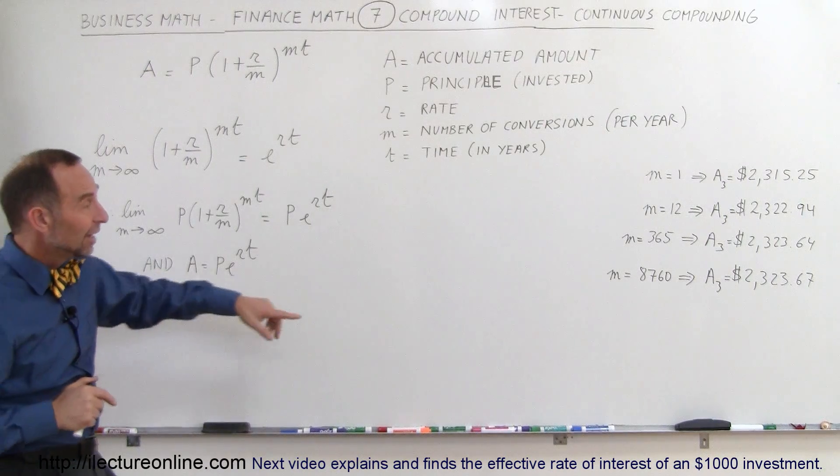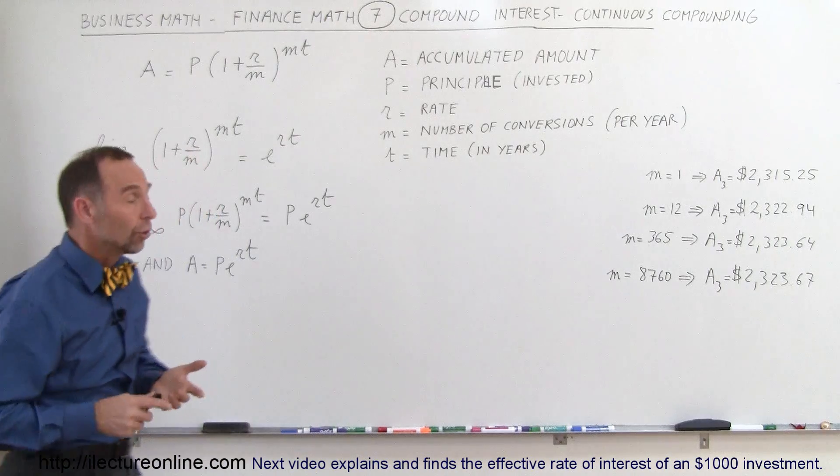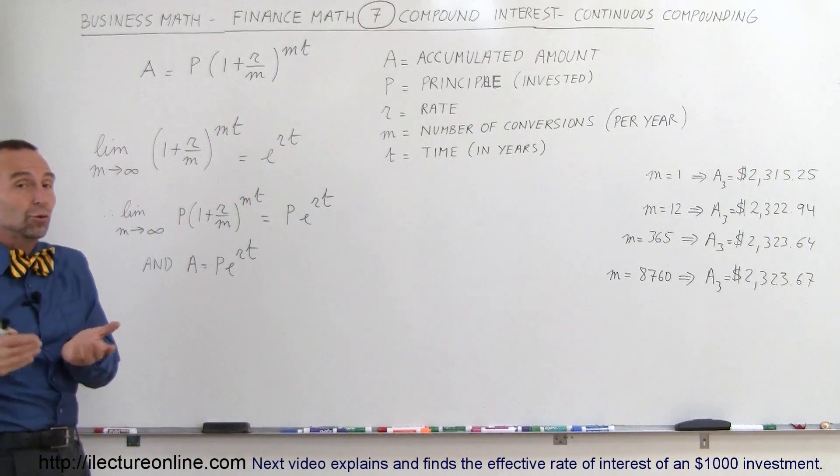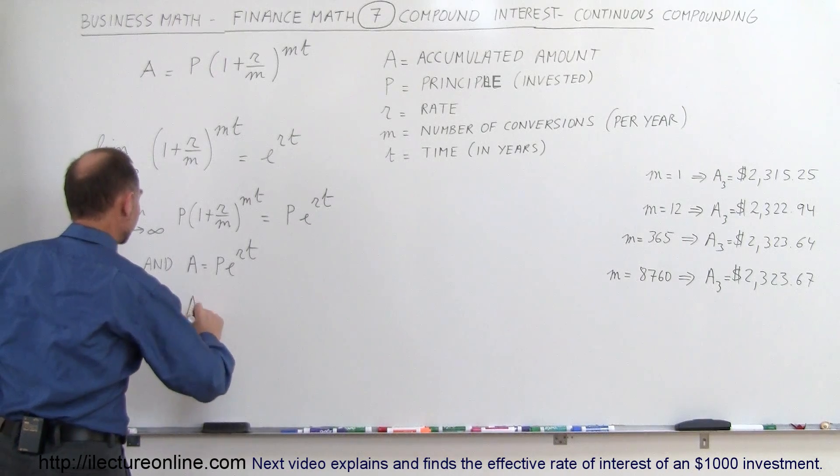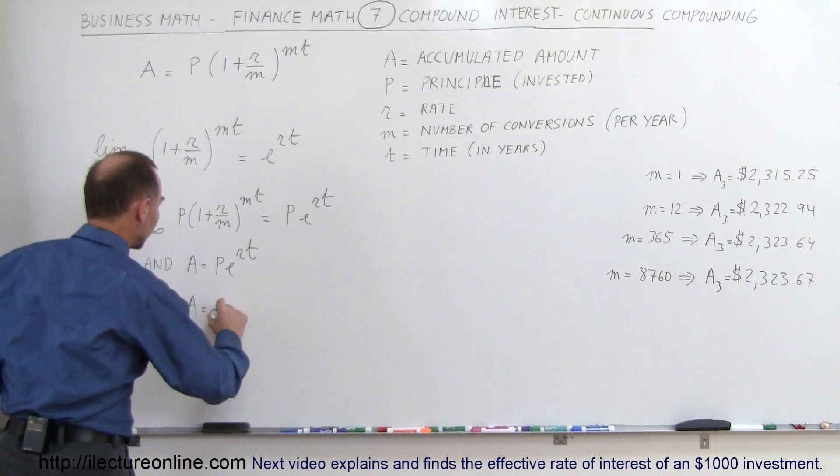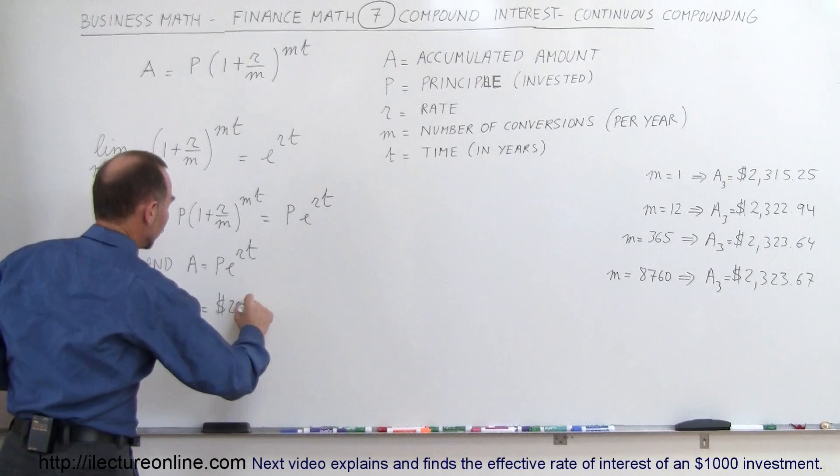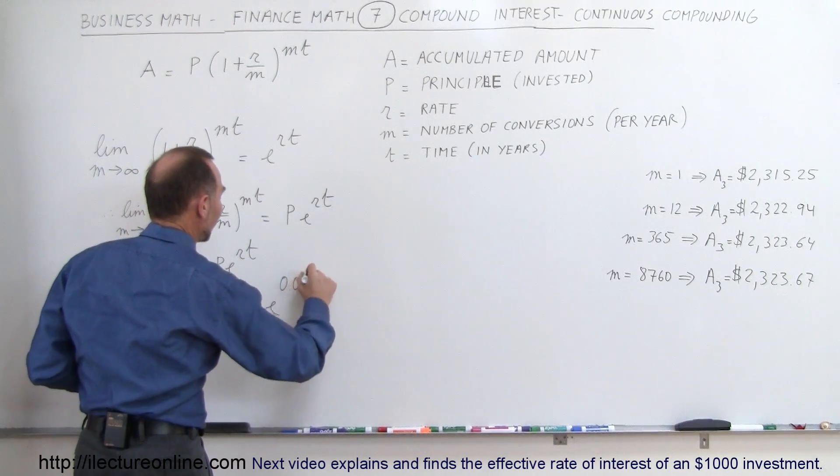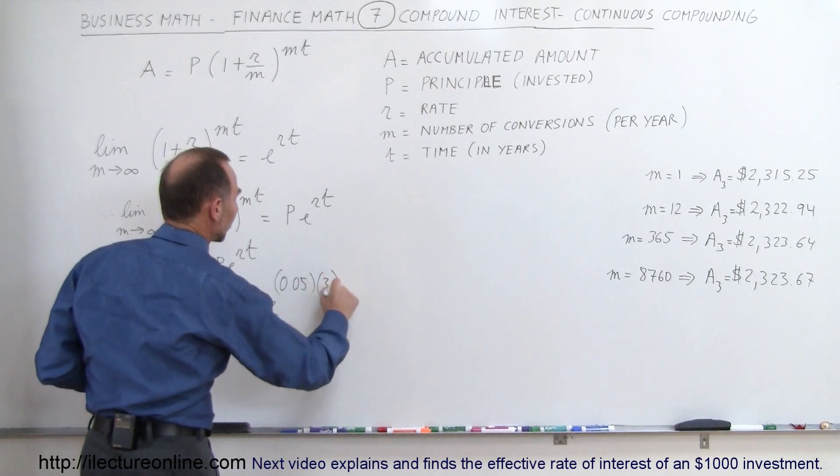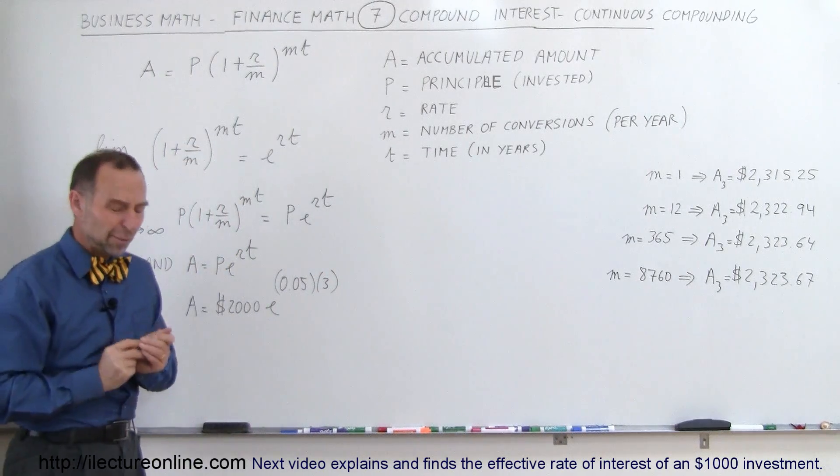So let's use this equation to see if we get a similar result, or what would be the advantage of doing continuous compounding. All right, so we can then say that A is equal to the $2,000 invested, times E raised to the rate 0.05 times the number of years, times 3. So let's see what we get.